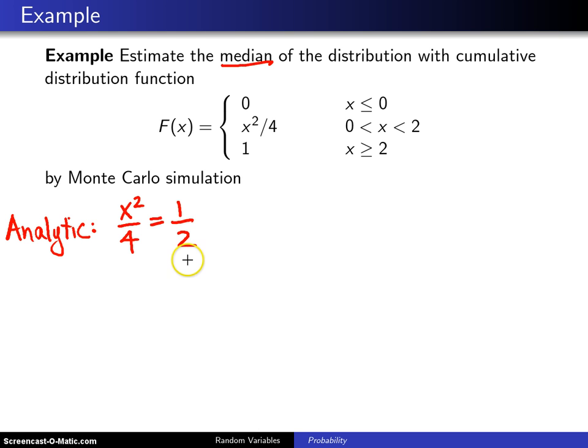Solving this for x will give us the population median. Multiply both sides of this equation by 4, and you get x squared equals 2. Finally to solve for x, you'll take the square root of both sides, and that will give you x equals plus or minus the square root of 2.